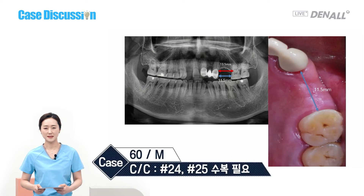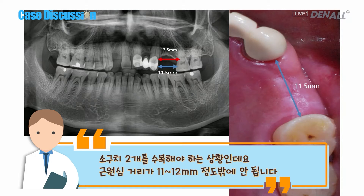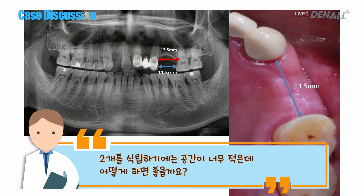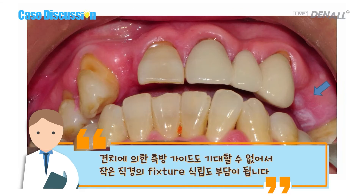The patient is a 60-year-old male. He wants restoration at number 24 and 25 — two premolars need to be restored. However, the mesiodistal distance is only 11–12 mm. It's too narrow to place two implants. As canine guidance cannot be expected, small diameter fixture placement may not be right.